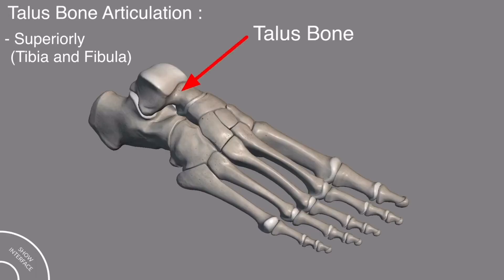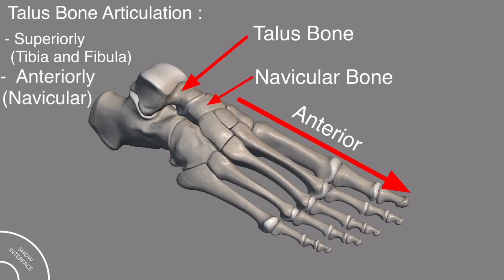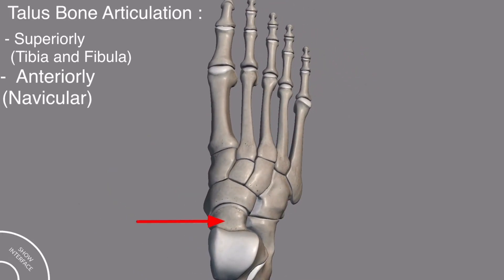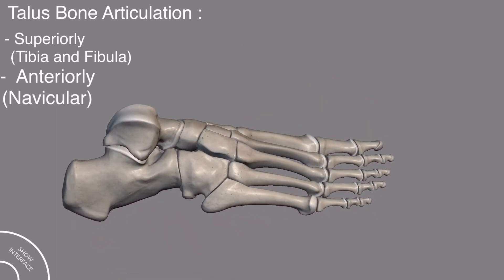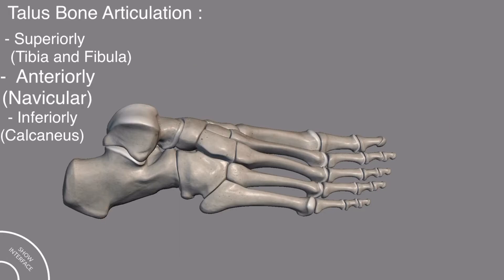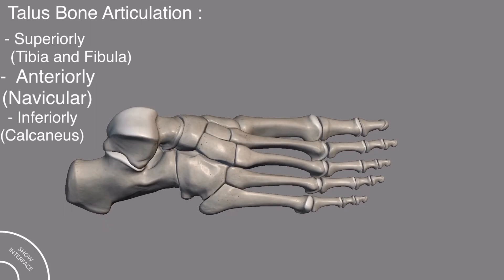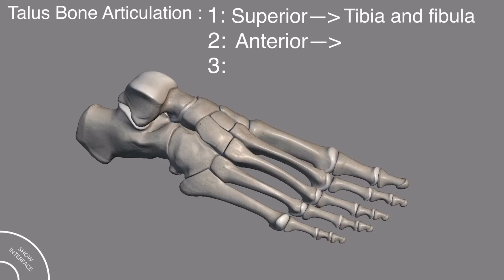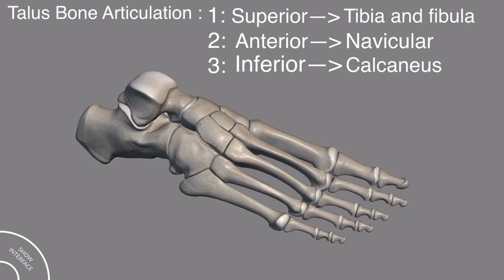The talus bone articulates anteriorly with the navicular bone — you can clearly see that from this view. The talus bone also articulates below with the calcaneus bone, which is also clearly visible here. So the talus bone has three connections: superiorly it is connected with the tibia and fibula, anteriorly it is connected with the navicular bone, and below it is connected to the calcaneus bone.